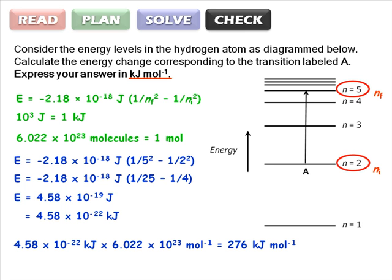The transition was from a lower energy state to a higher energy state, so we'd expect the energy change to be positive. It is. Also, the energy value in joules is larger than the energy value in kilojoules, and the energy value per mole is larger than the energy value per molecule. All of this makes sense, so we're done.